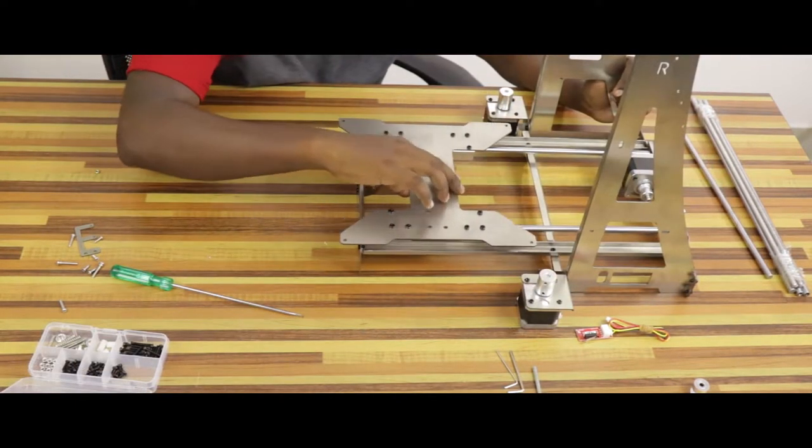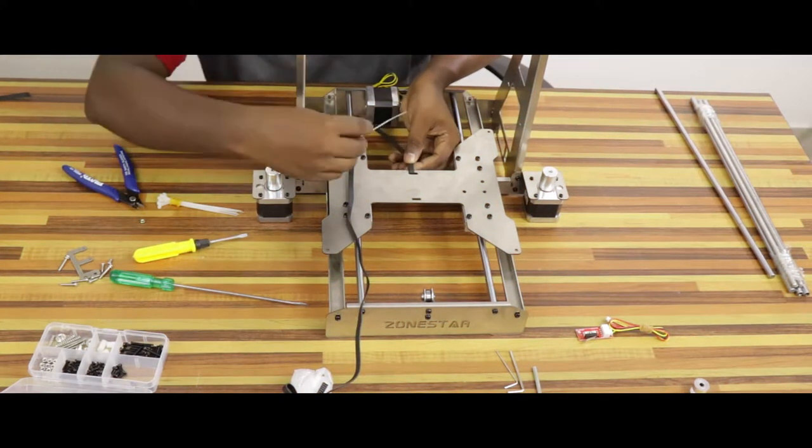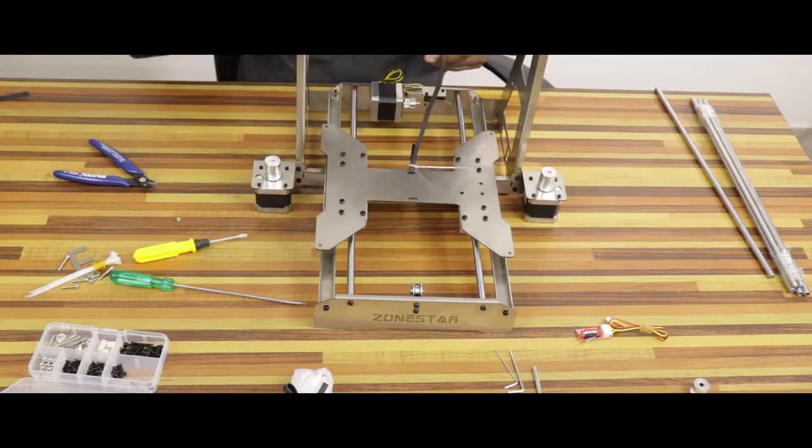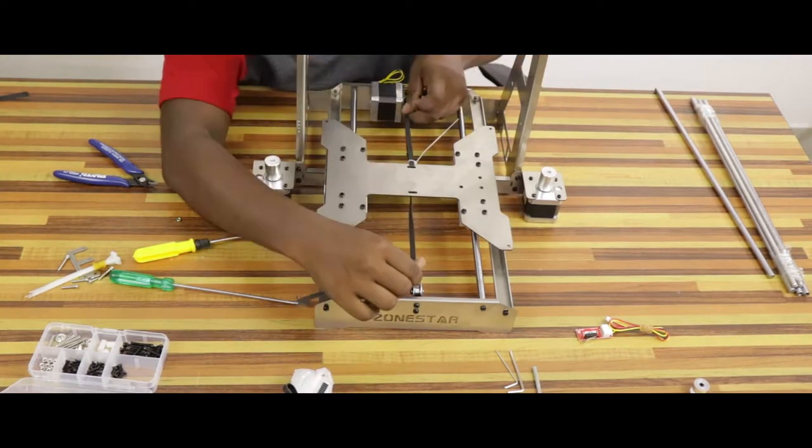It looks like we are good. We can proceed to attach the Y-axis timing belt. Now, insert the belt through Y-axis motor pulley and then through the front frame pulley and gently tighten the belt using two cable ties on the bracket.